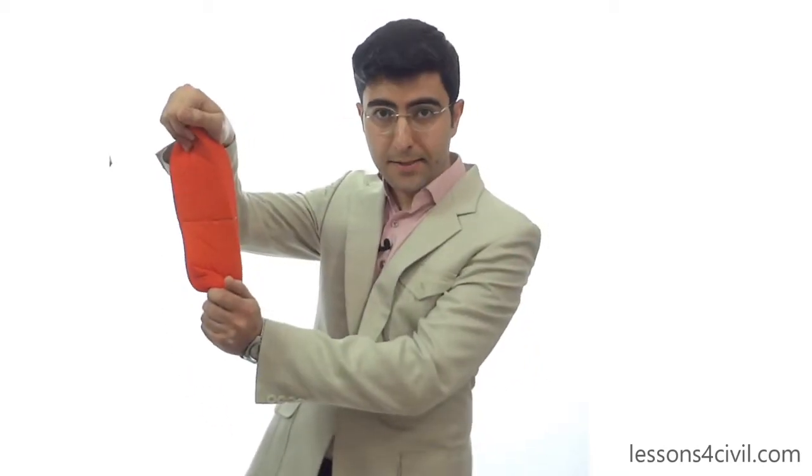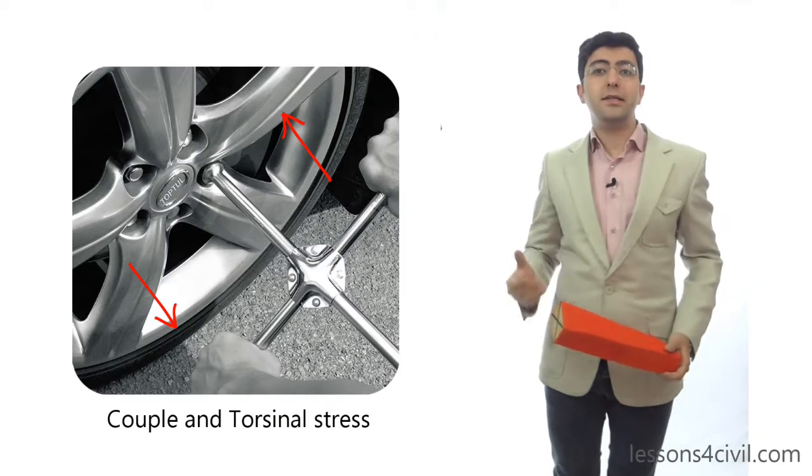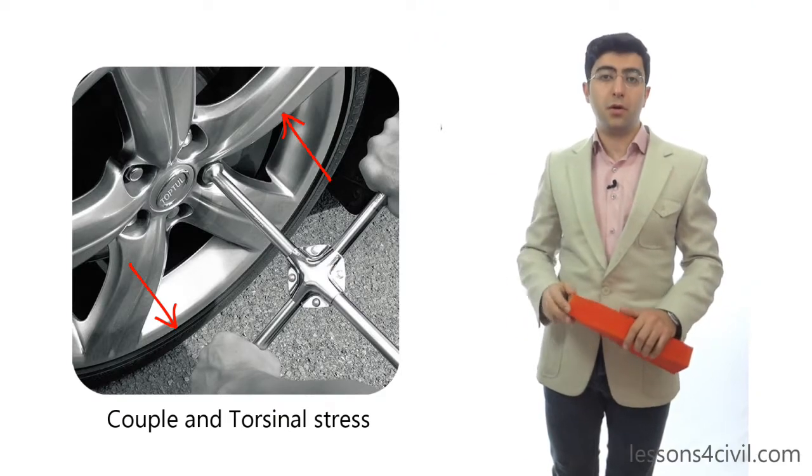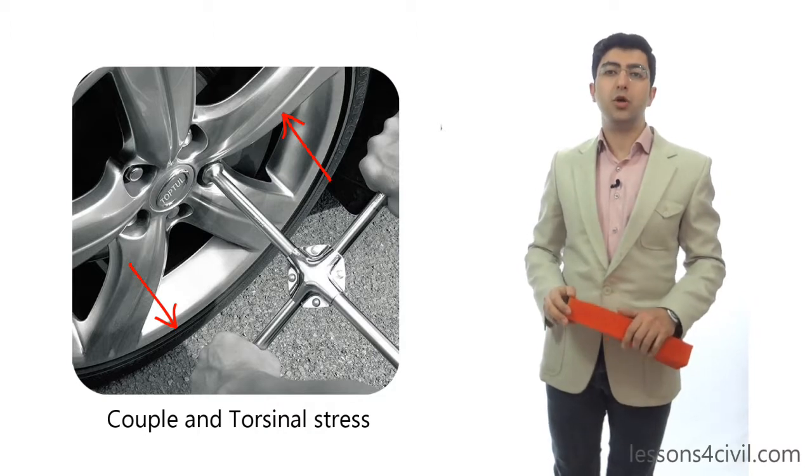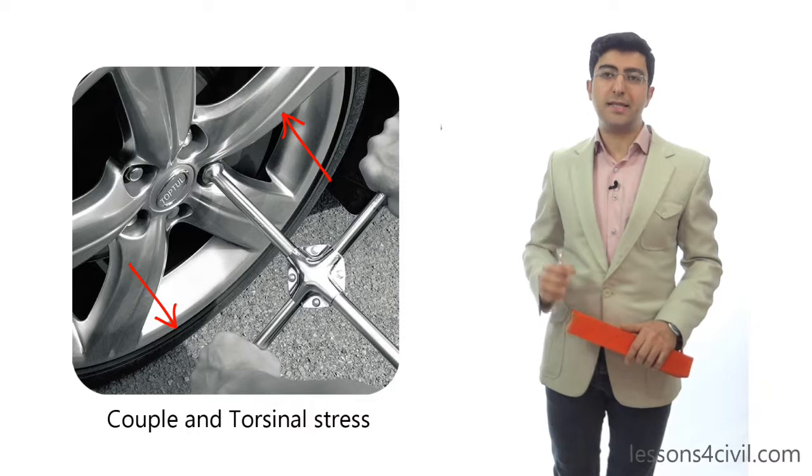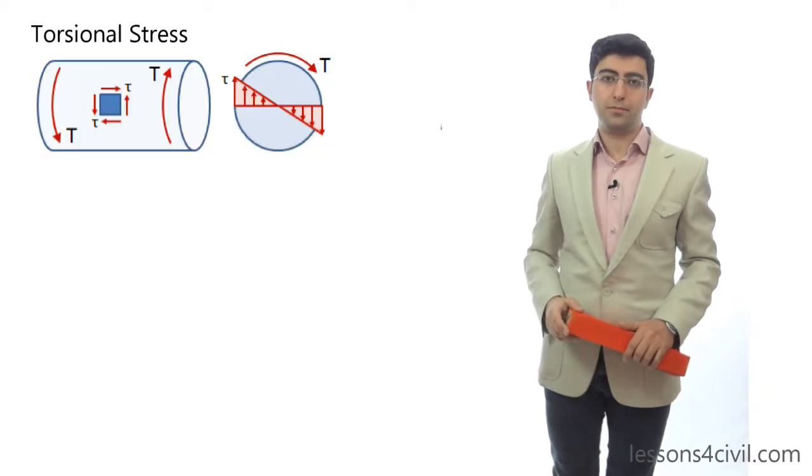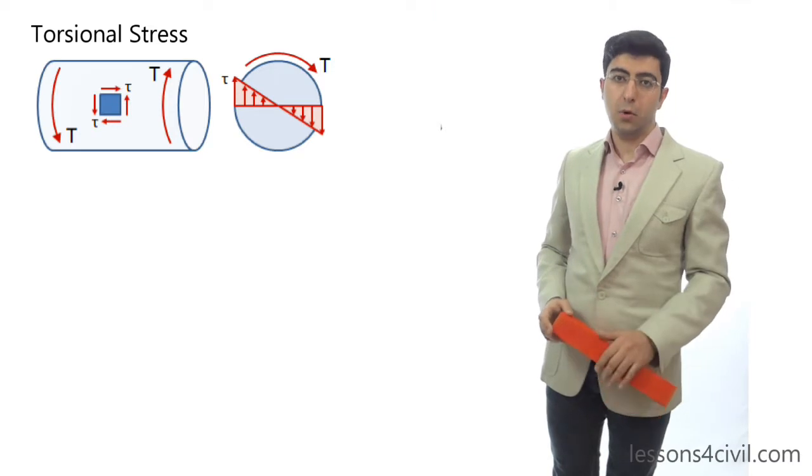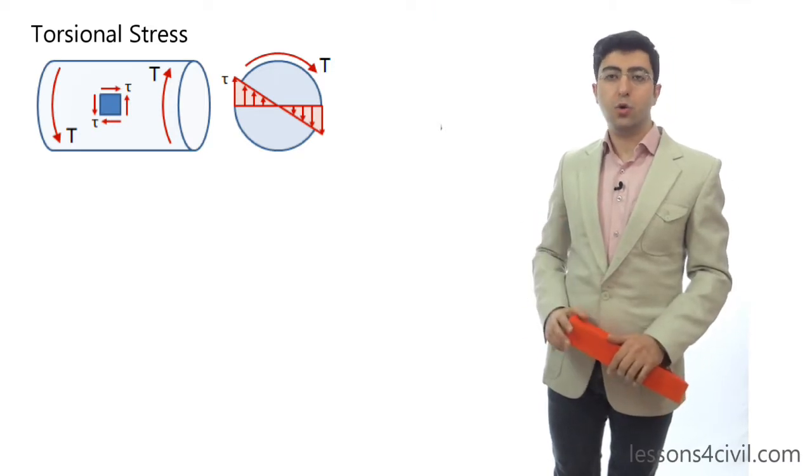In many cases, structural members are subjected to stress due to twisting. When we tighten a screw, for example, we apply two equal opposite parallel forces causing a couple. And this couple creates a torsional stress inside the body of the bolt. Now, let's have a closer look to see what happens inside the bolt when it is under torsional stress.